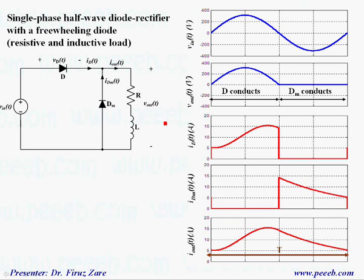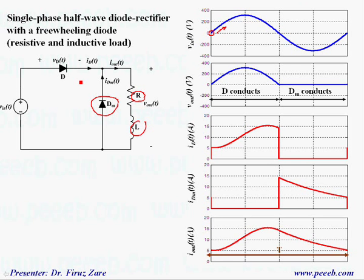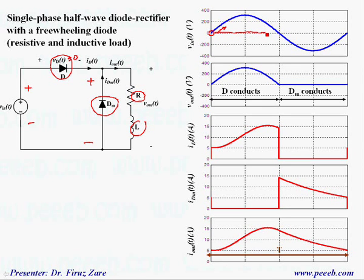In the previous slide, we saw that the output voltage can be negative when we have a resistive and inductive load. Using a freewheeling diode, we can remove the negative part. Once the output voltage goes negative, this freewheeling diode can conduct and the current circulates through that loop. Starting from zero crossing, when the input voltage becomes positive, the main diode conducts. With the main diode on and assuming zero voltage drop, the input voltage appears across the load — since it's positive for the first half cycle, the freewheeling diode is off and the current circulates through the main loop.